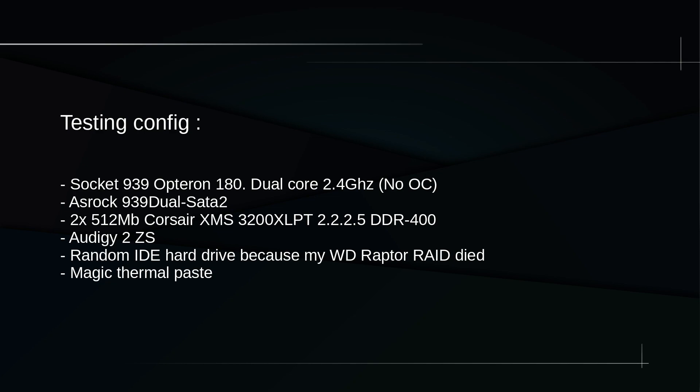This is my testing environment: a Socket 939 Opteron 180, a dual-core 2.4 GHz processor used without overclocking; an ASRock 939 Dual SATA 2 motherboard; two sticks of 512 MB Corsair XMS — so 1 GB of DDR400 with good timings; a Creative Audigy 2ZS sound card; and a random IDE hard drive, because my WD Raptor RAID 0 died during the tests.